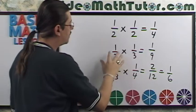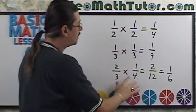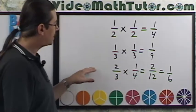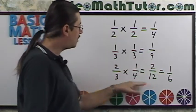And let's do the same thing for the others. A third times a third is a ninth. And two thirds times a quarter, I get two twelfths, which is a sixth. So it looks like if you just multiply straight through your numerators, you get the answer. Let's make a rule out of this.